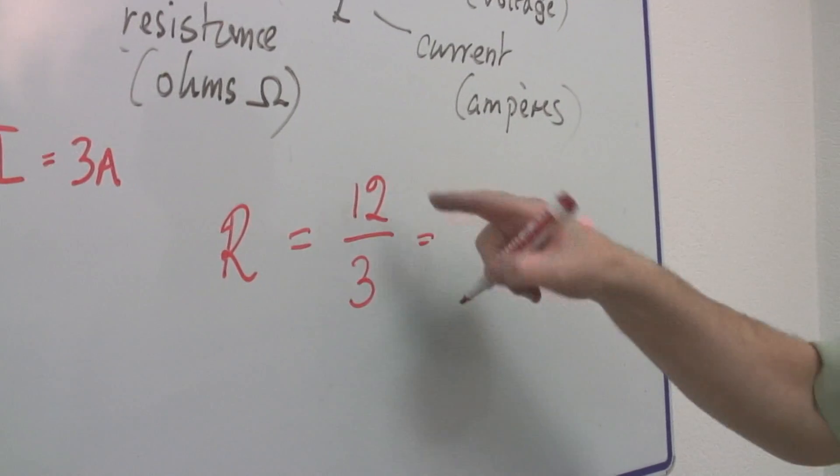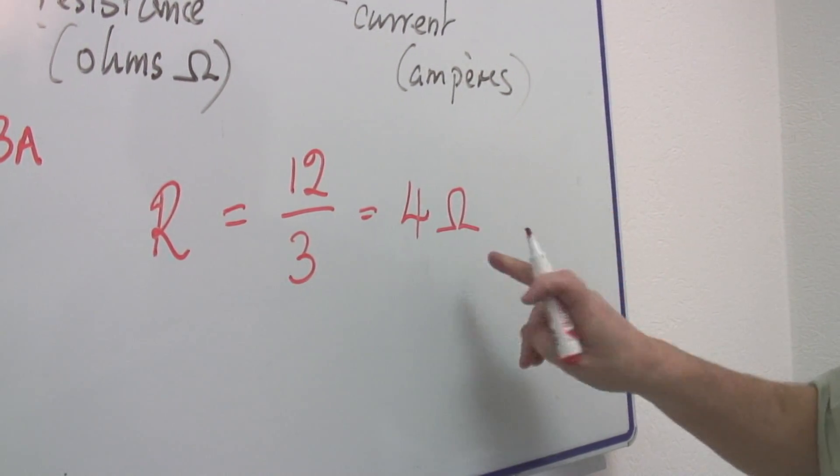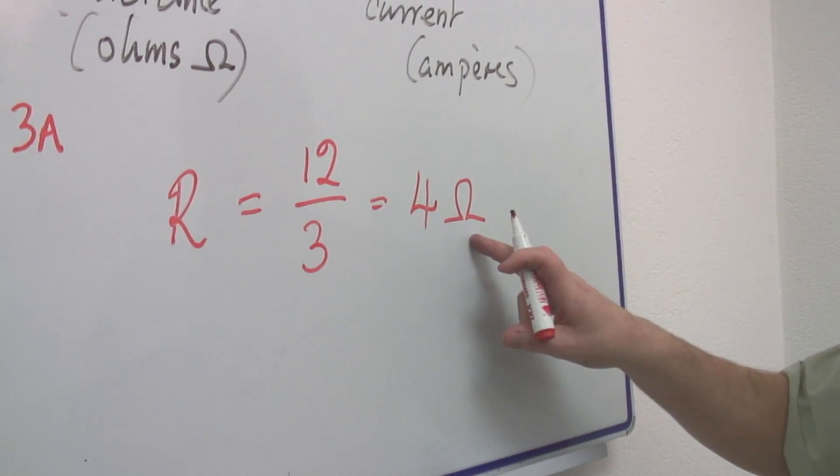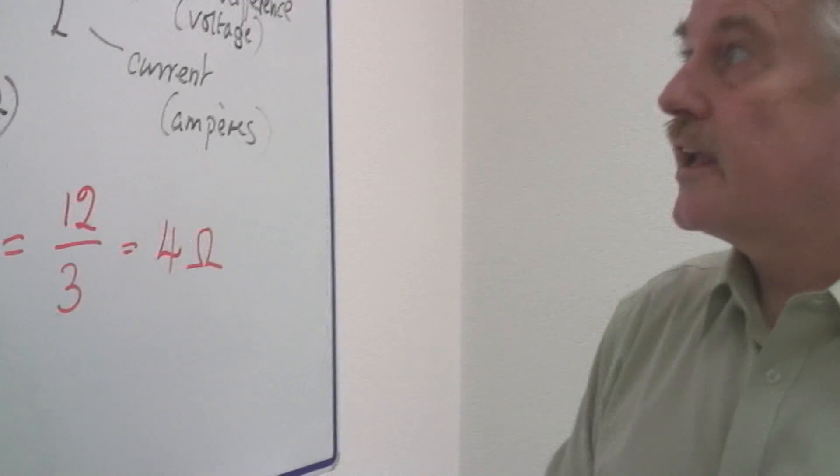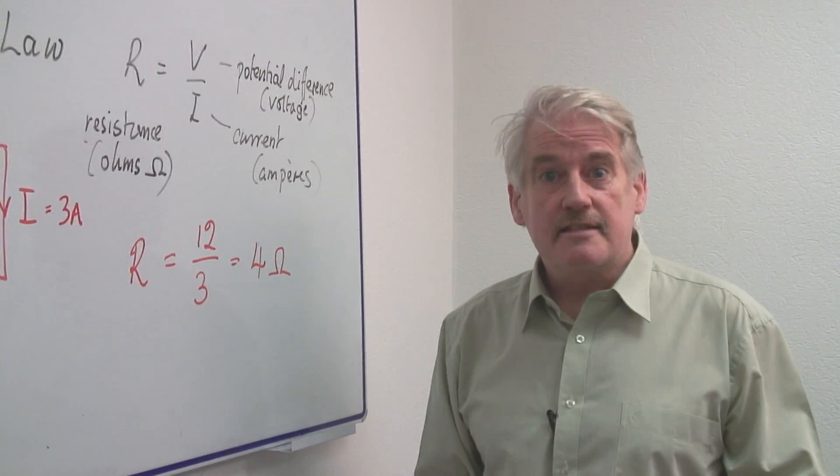which as you can see, 12 divided by 3 is 4 Ohms. And this is the omega, the Greek symbol, right? So 4 Ohms. So this is briefly the law which tells us how to calculate resistance.